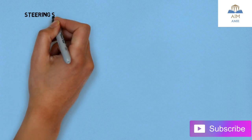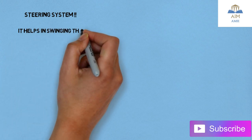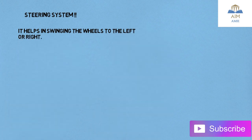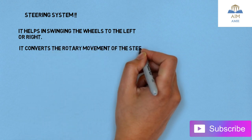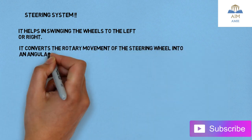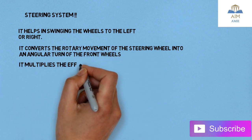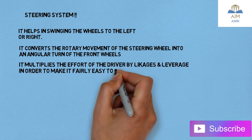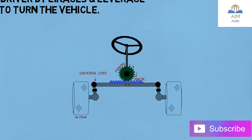The next one is the steering system in the automobile. The steering system helps in swinging the wheels to the left or to the right. It converts the rotary movement of the steering wheel into the angular turn of the front wheels. It multiplies the effort of the driver by linkages and leverages, which is very important in order to make it fairly easy to turn the vehicle.